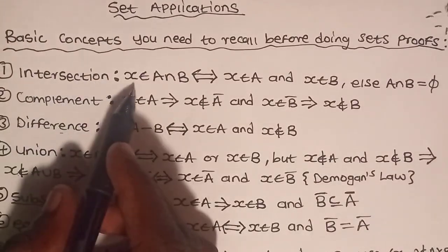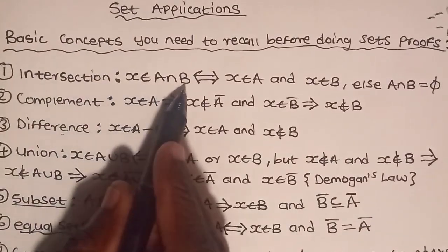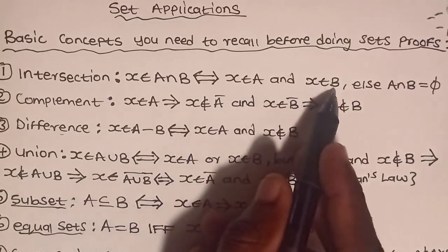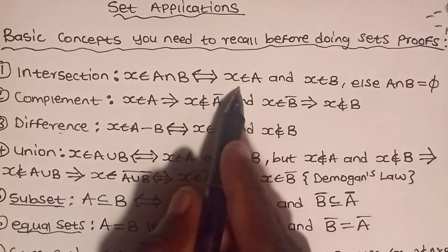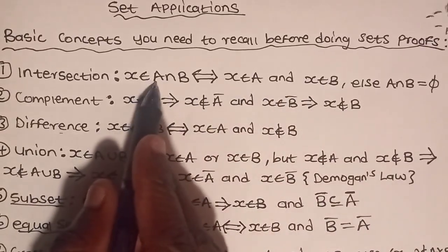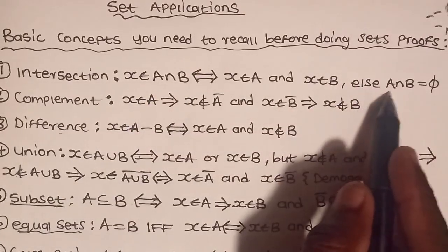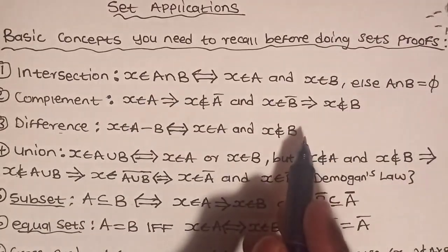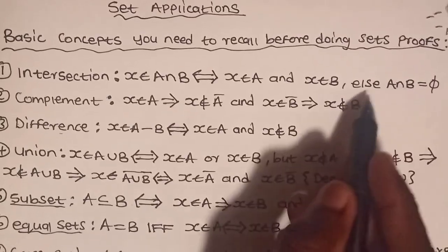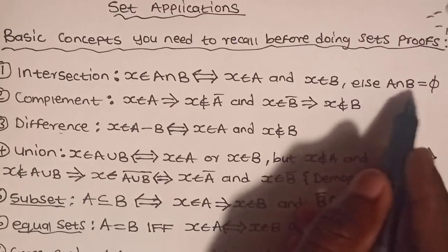Starting with our proofs, you'll first have to understand the concepts. Intersection: X is an element of A intersect B, if and only if X is in A and X is in B. X has to be in both A and B for it to be in the intersection of A and B. Else, if X is not in one of A or B or is not in both, then the set will be empty.